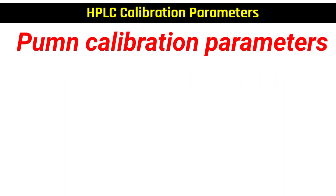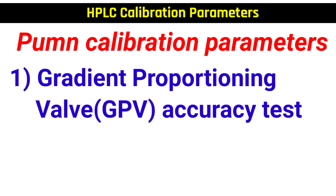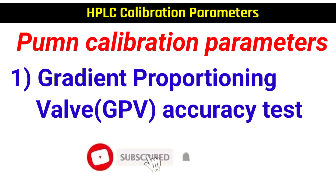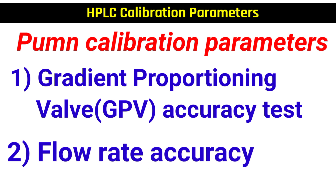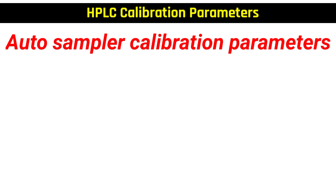Number one is pump calibration parameters. It includes: number one, gradient proportioning valve (GPV) accuracy test; and number two, flow rate accuracy.